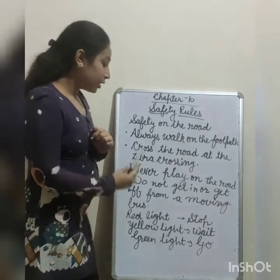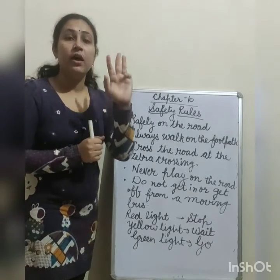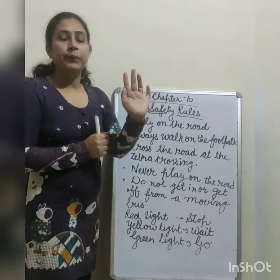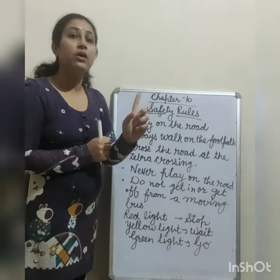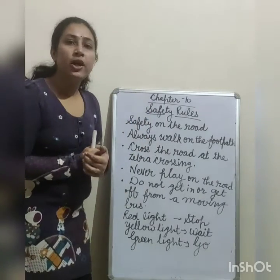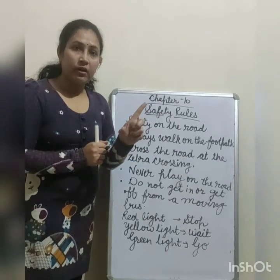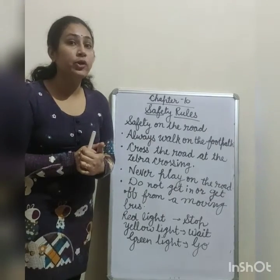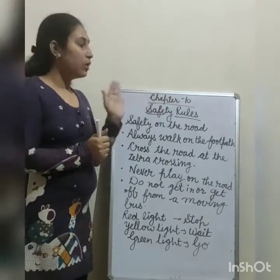How many traffic lights are there? Three traffic lights are there: red light, yellow light, and green light. Red light — stop. Yellow light — wait. And green light — go.